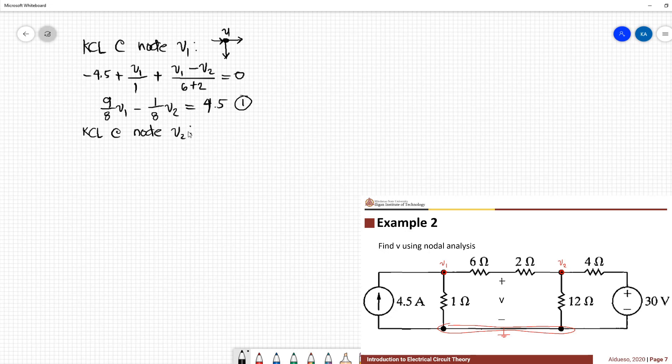For equation 2, KCL at node V2. We have V2 minus V1 over 8 plus V2 over 12 plus V2 minus V1 over 4 plus V2 over 4 equal to 0.